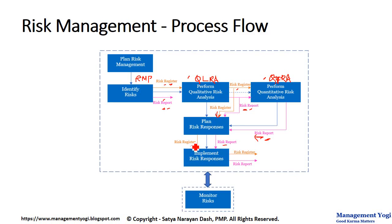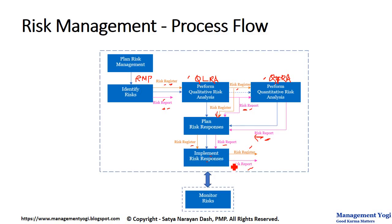Both the risk register and risk report are going to act as inputs to Implement Risk Responses, where the risk response plans or strategies that you have developed are going to be implemented. As you implement them, the risk register will be updated and the risk report is also going to be updated, which is why they are the outputs of Implement Risk Responses.